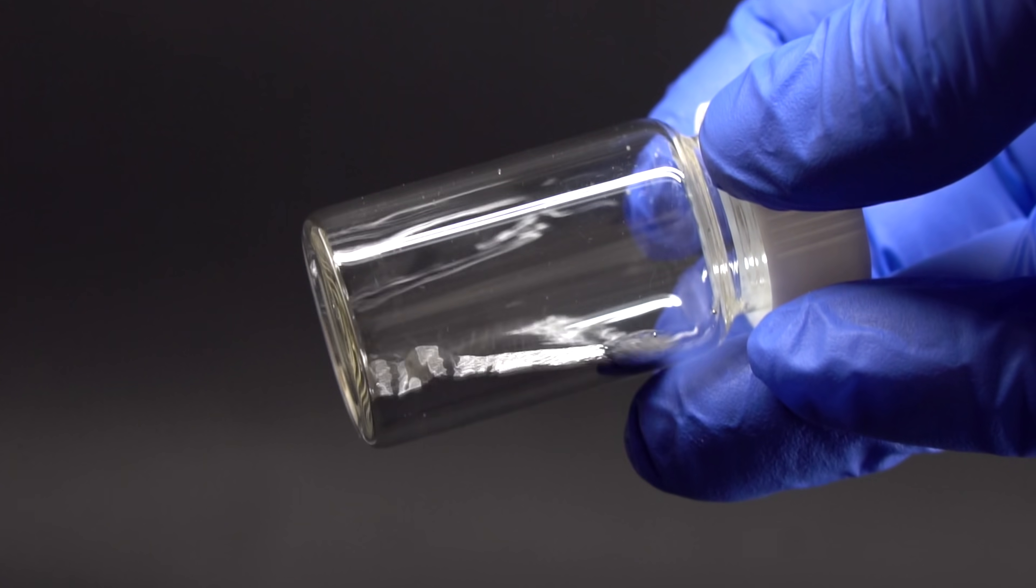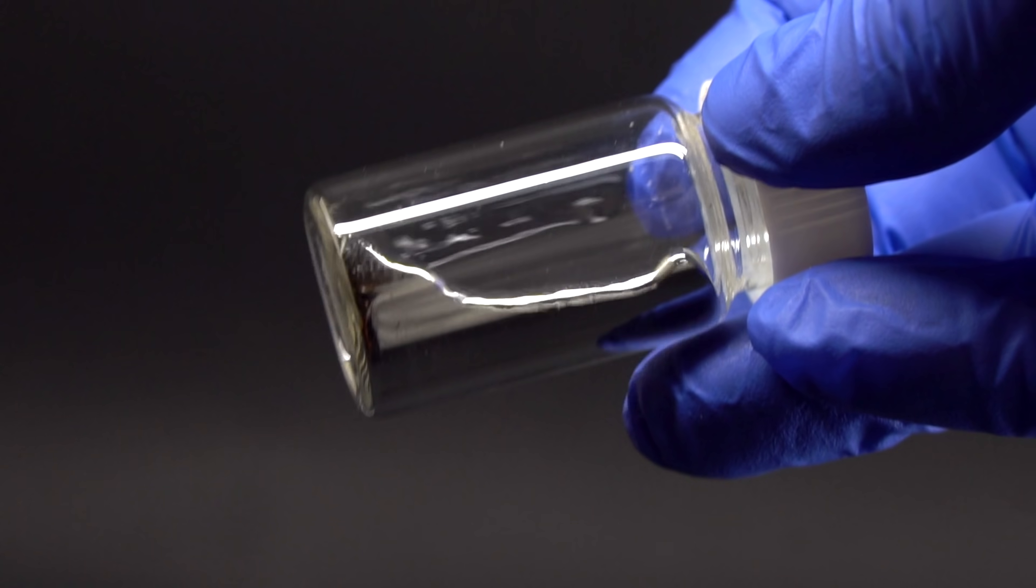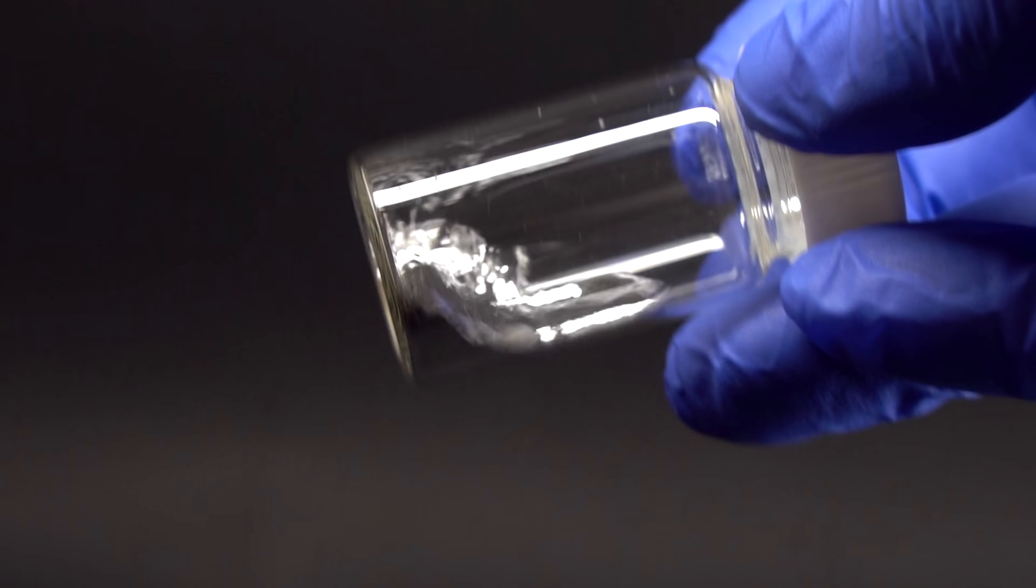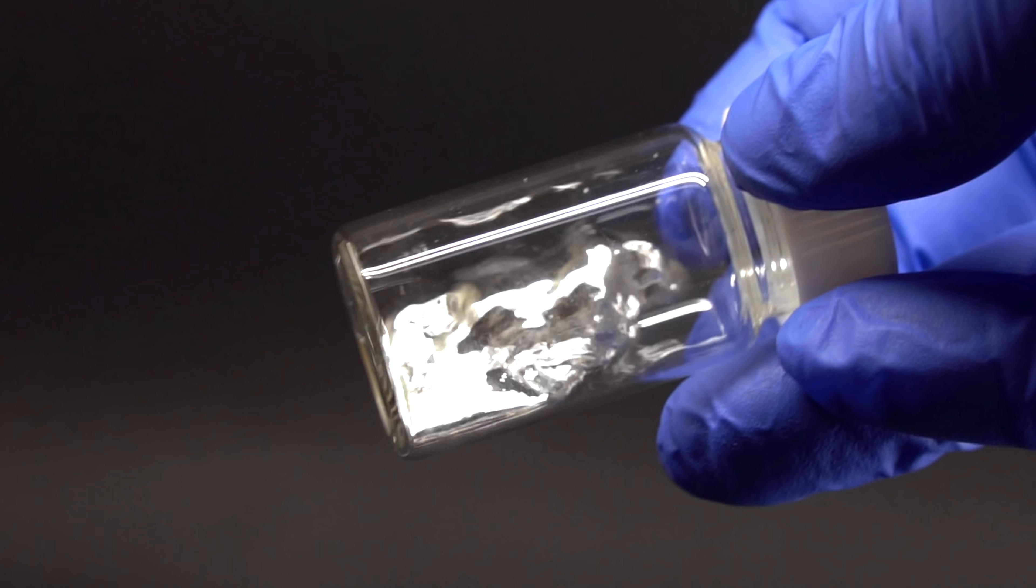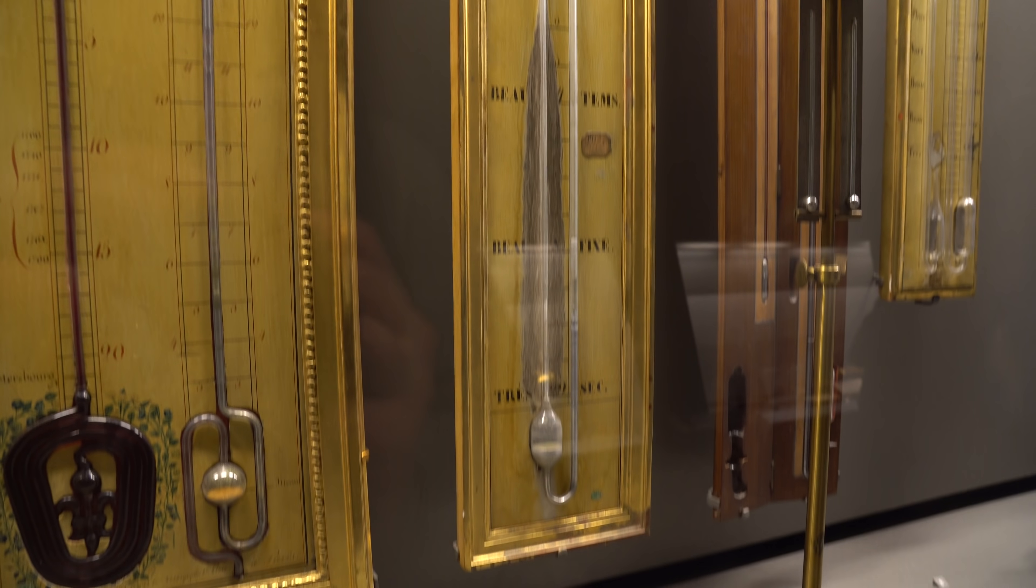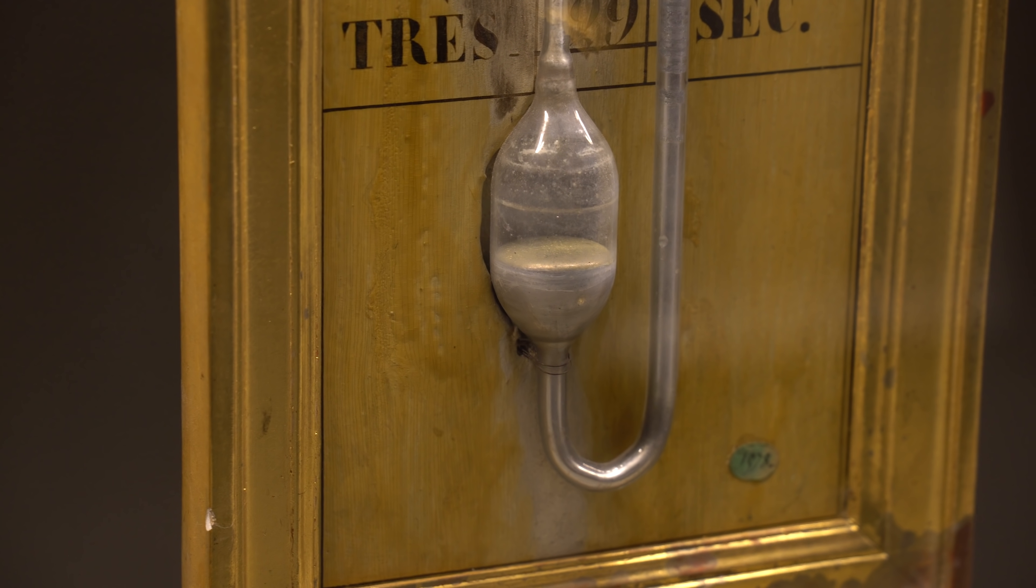Because drops of this metal can easily roll into some narrow spaces, and it will be extremely difficult to get them out of there. Because of having high density and bad soaking properties, this metal was used in the first barometers measuring atmospheric pressure and also in thermometers.